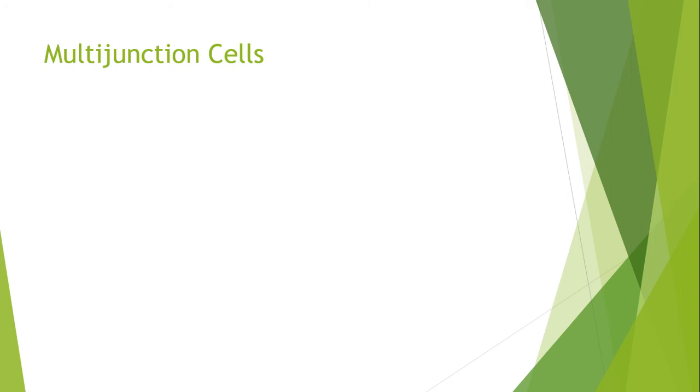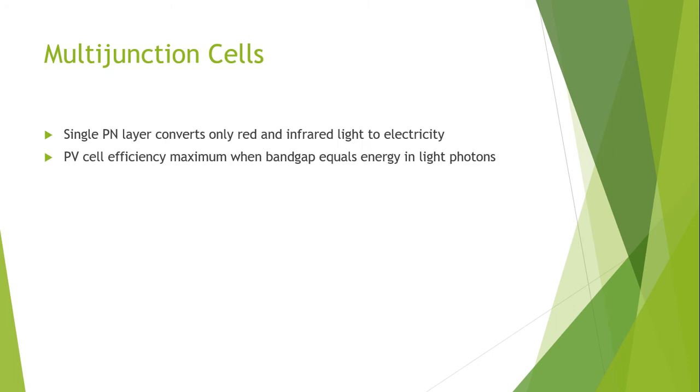Hello and assalamu alaikum, this is part of lecture number 17. We will continue with the types of photovoltaic or solar cell. In this particular part of the lecture I will discuss the multijunction photovoltaic cell. A single layer PN junction layer converts only red and infrared light to electricity, so the remaining spectrum or bandwidth of the light is totally wasted and is not being converted into electricity.